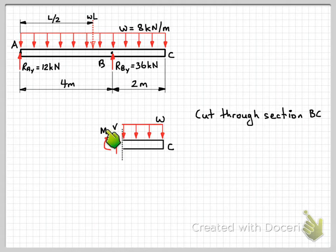Because we're wanting to write an equation for these internal actions as a function of where we are in the beam, so where this imaginary cut is, we need to define that. We could define x as being from point A to where the cut is, and then write our equations accordingly.